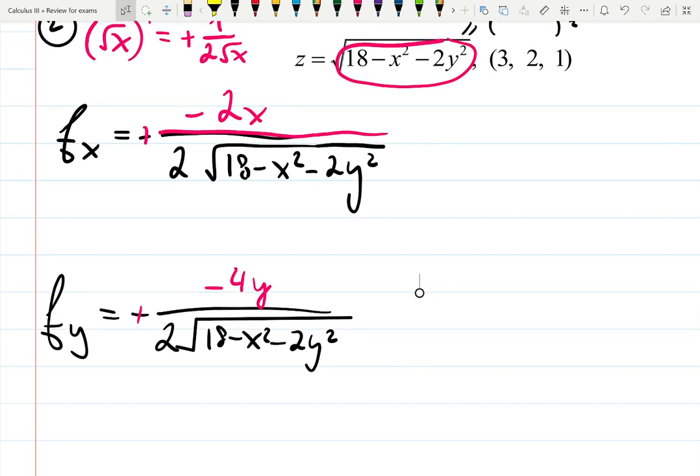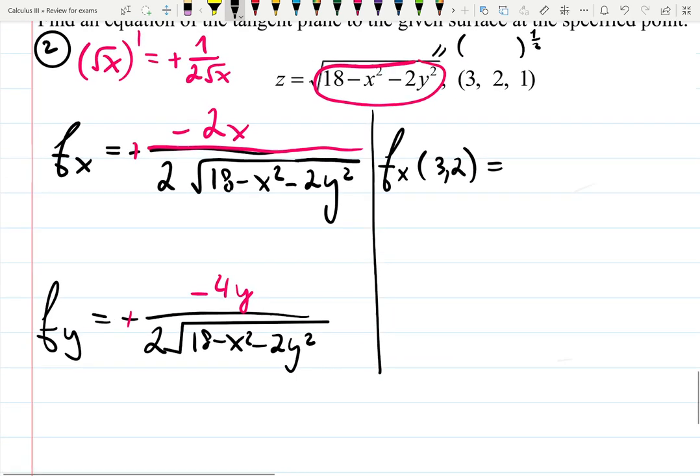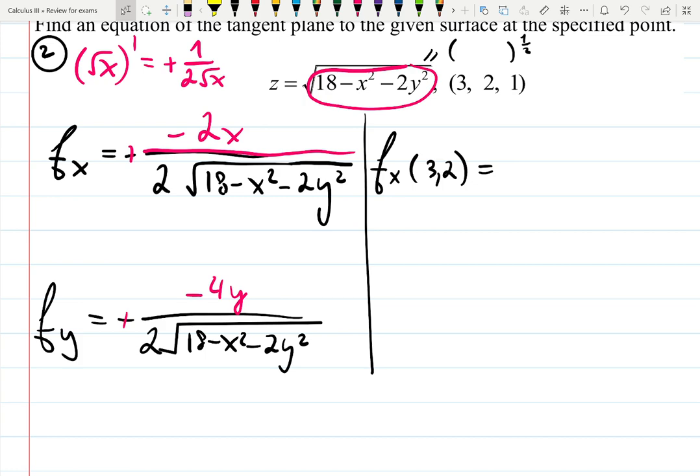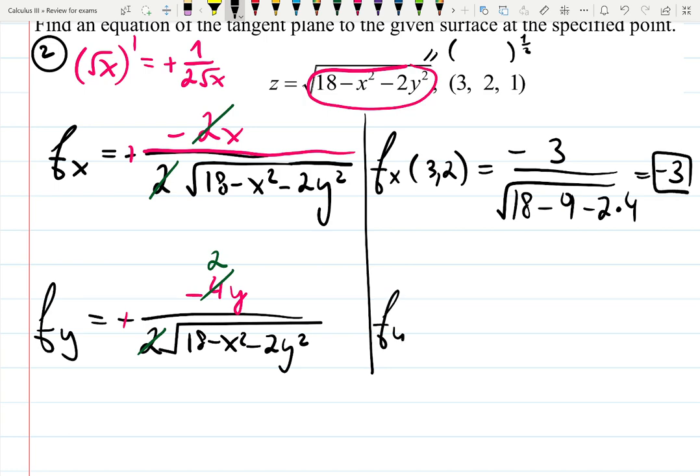Now plug the point 3, 2, 1. Derivative with respect to x at 3 and 2 will be, plug carefully everything and just calculate. Maybe just skip calculations. But I can write down minus 2 times 3. 2 and 2 actually cancels out. You don't have to be bothered by this. So just minus x minus 3 square root 18 minus 9 minus 2 times 4. That is minus 3. Partial derivative with respect to y at 3 and 2 will be minus 2 times y, which is 2. And then the denominator is exactly the same. 18 minus 9 minus 2 times 4. In this case, it's minus 4.